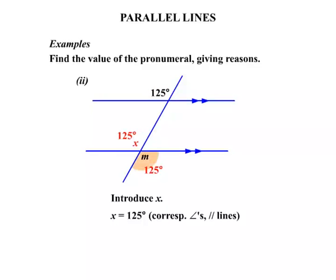We then could say that M equaled 125 degrees. And the reason behind that is that they were vertically opposite angles. So in that example you can see that sometimes we actually will introduce our own letter and mark it in on the diagram to help us writing the solution. Terrific!